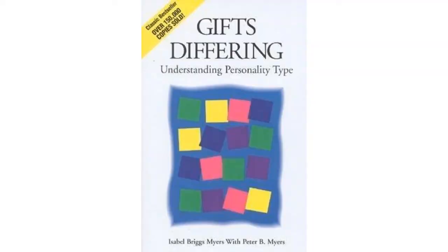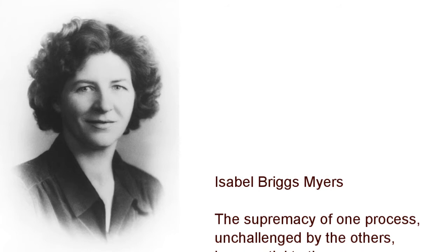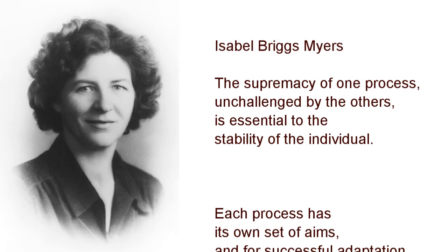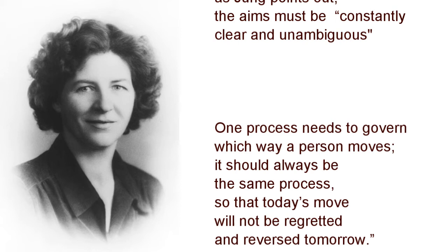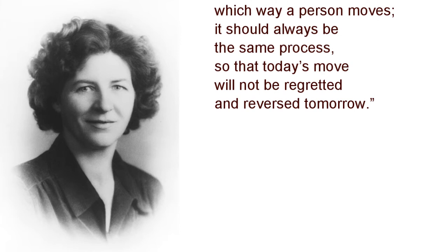In Gifts Differing, Isabel Myers explains that the supremacy of one process, unchallenged by the others, is essential to the stability of the individual. Each process has its own set of aims, and for successful adaptation, as Jung points out, the aims must be constantly clear and unambiguous. One process needs to govern which way a person moves, and it should always be the same process, so that today's move will not be regretted and reversed tomorrow.